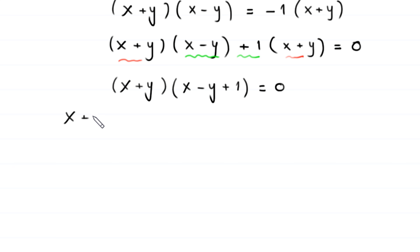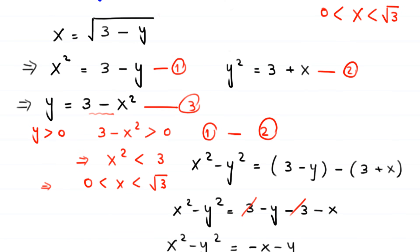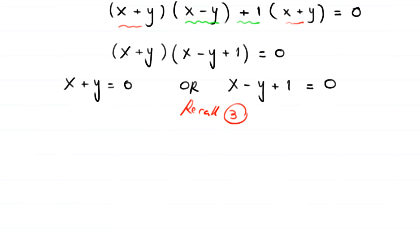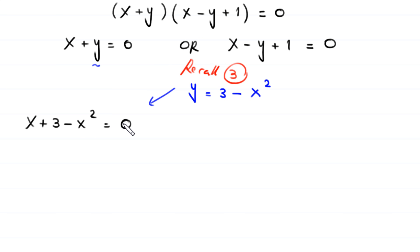From the factored equation, either x plus y equals 0, or x minus y plus 1 equals 0. Recalling equation 3, y equals 3 minus x squared. Substituting into the first case x plus y equals 0 gives x plus (3 minus x squared) equals 0. Rearranging and multiplying by negative 1 gives x squared minus x minus 3 equals 0.